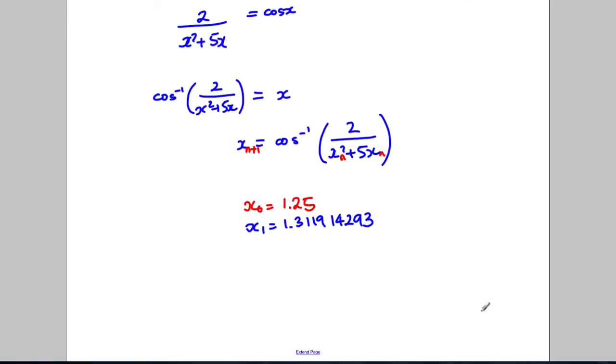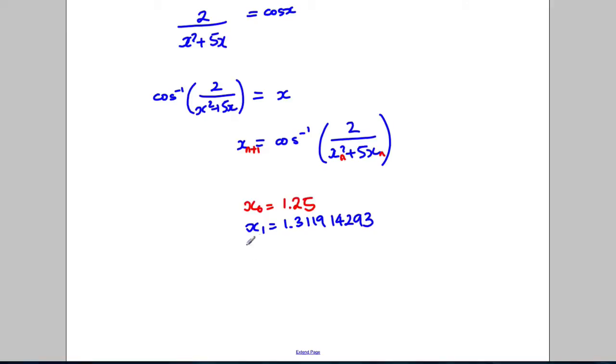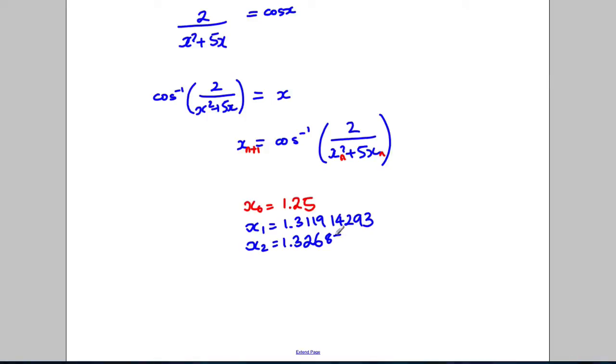Then I can press equals again the beauty of this method and I get my next one. So x2 is 1.326. x2 equals 1.3 26 858484.